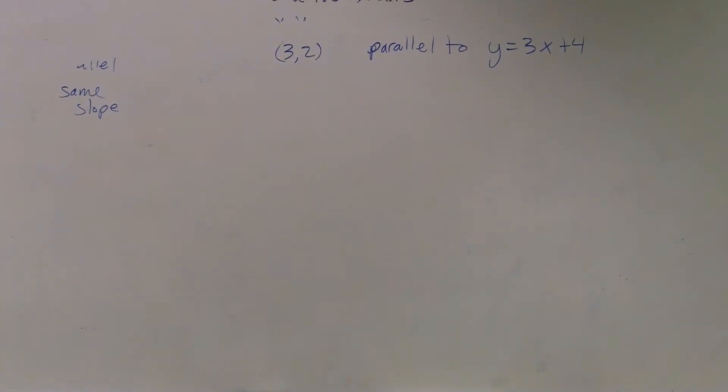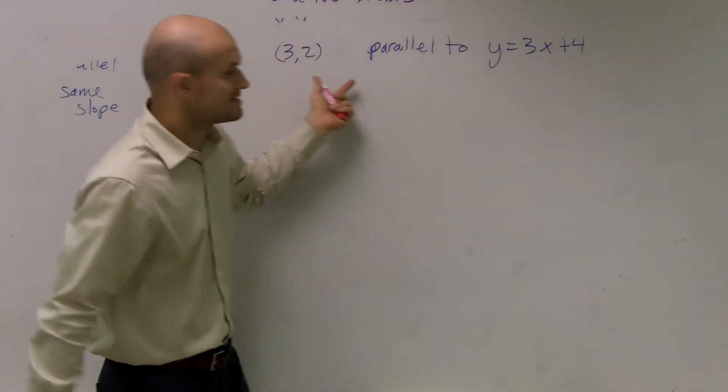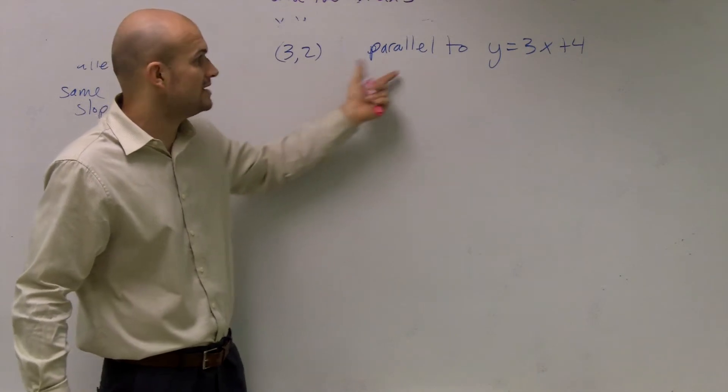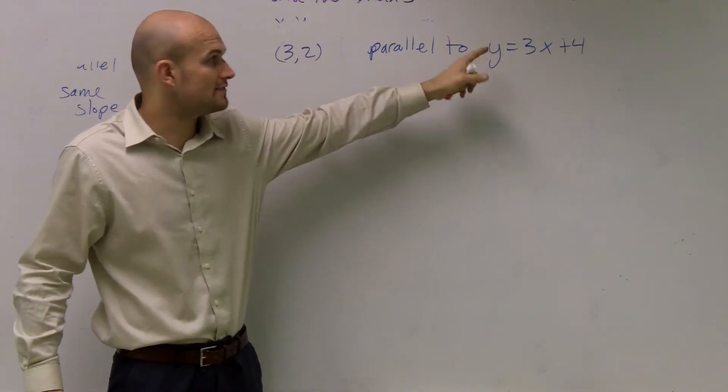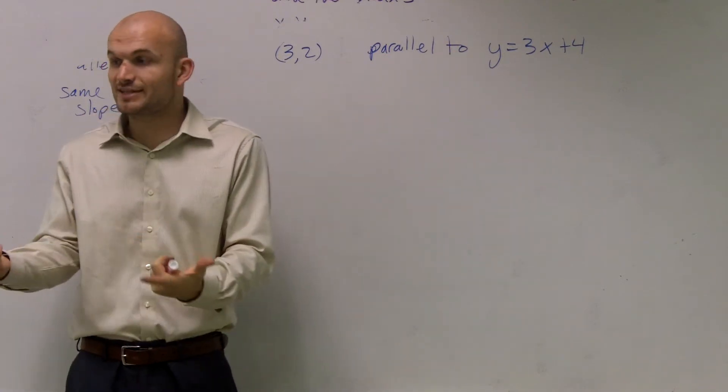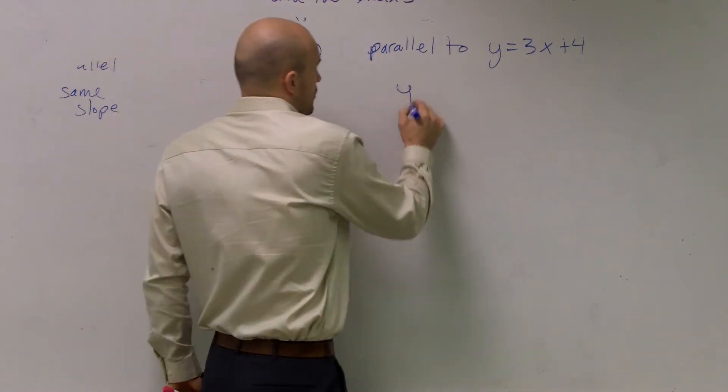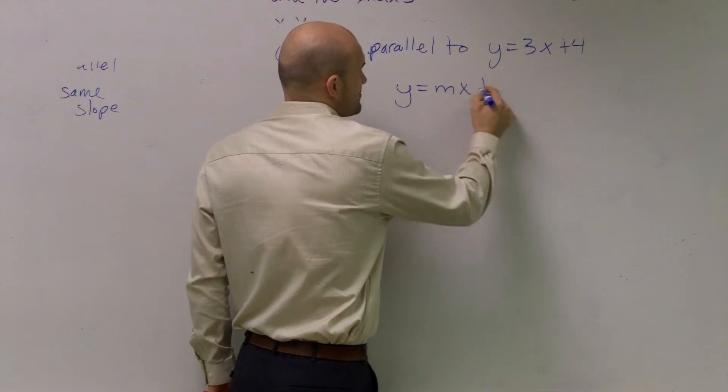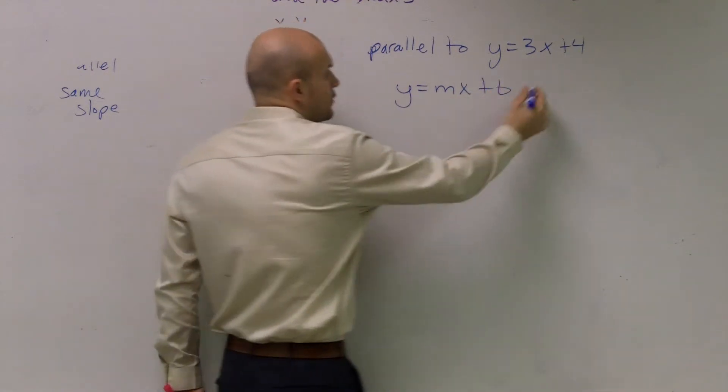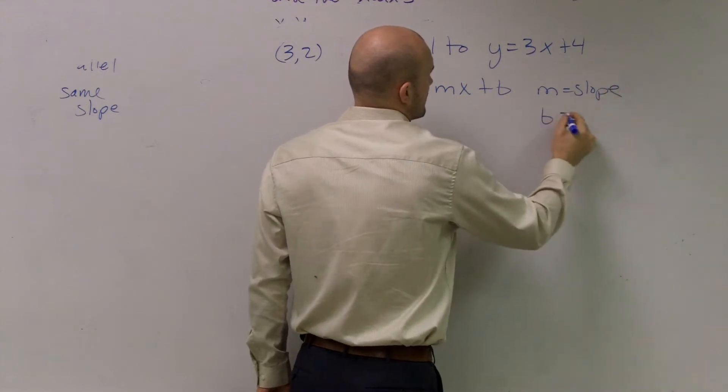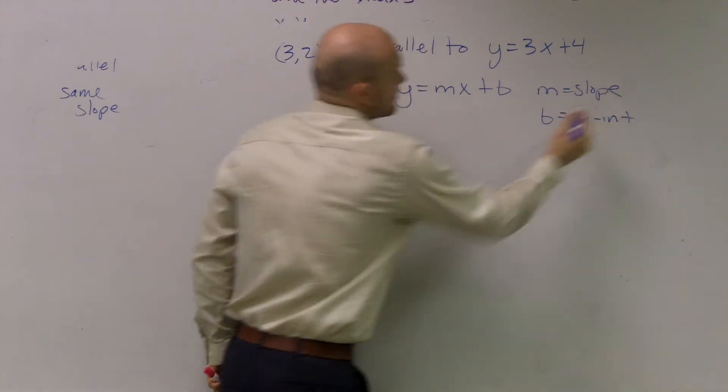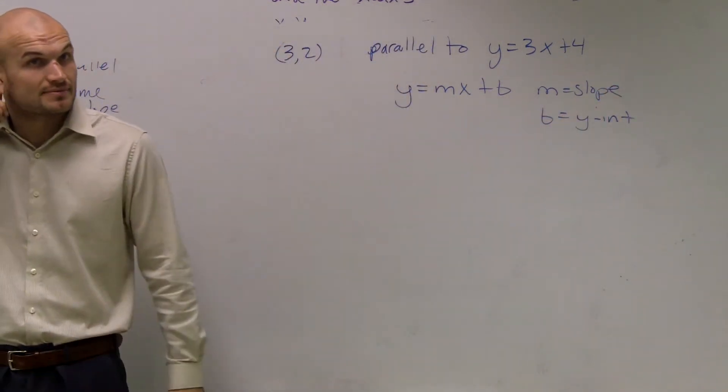When we're given a point or we're given a line, and I say here's a point, I want my point to be parallel to my equation. Therefore, if it's going to be parallel, or first of all, if I want to find the equation of a line, I need to write y equals mx plus b. For m equals your slope, and b equals your y-intercept.